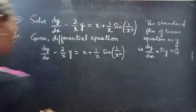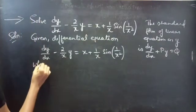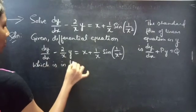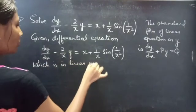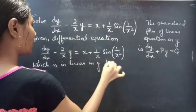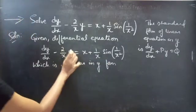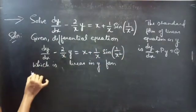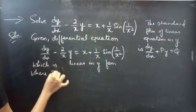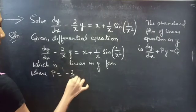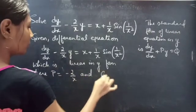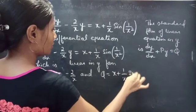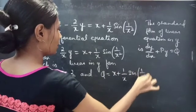Now, by comparing these two equations, we can say that the given equation is linear in y form. By comparing, we will get P and Q, where P equals minus 2/x and Q equals (x + 1/x) times sine(1/x²).